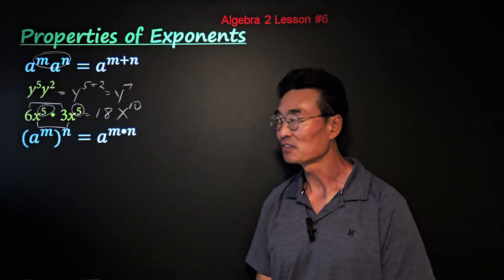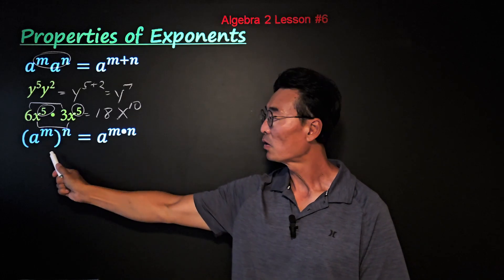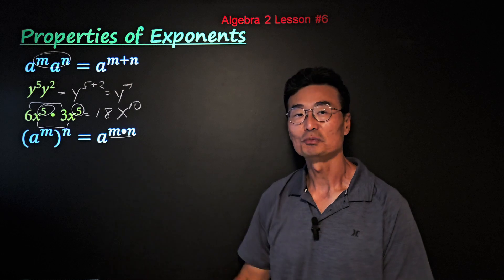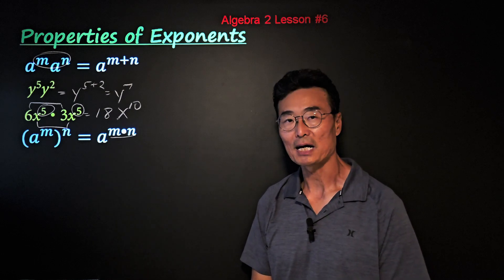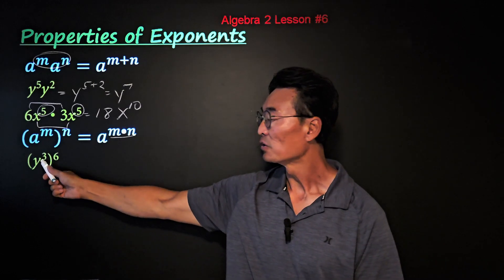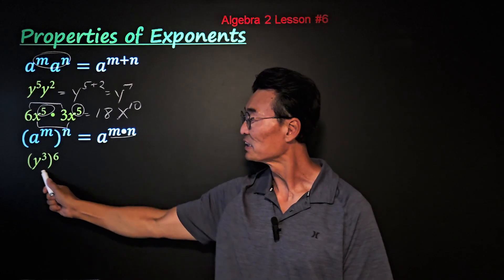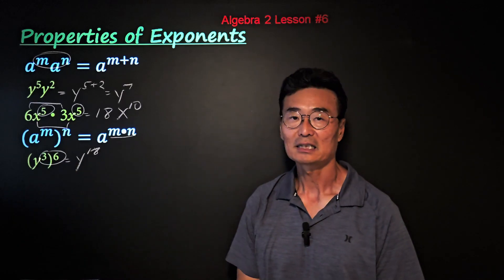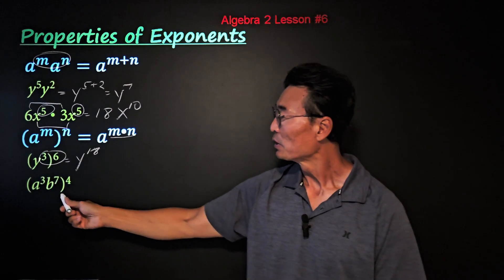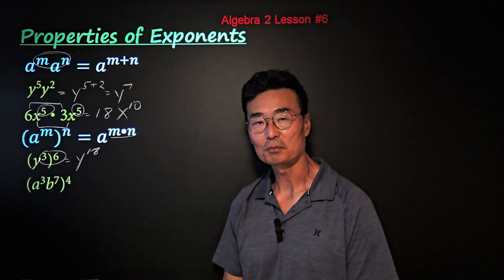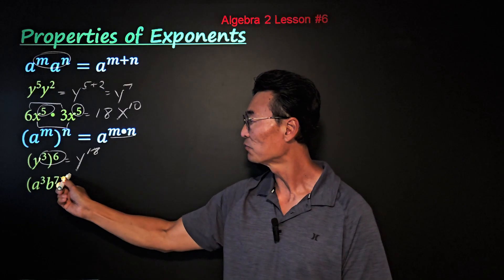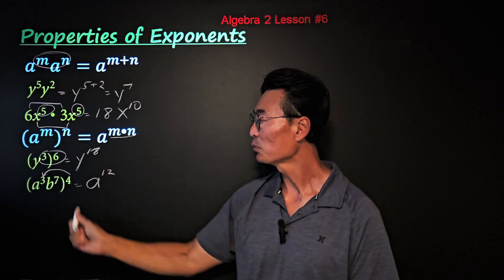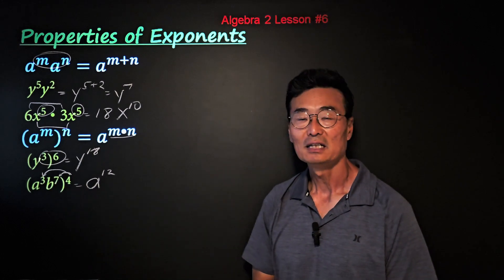The second rule: if you have a to the n, all to the n power — an exponent raised to an exponent — you multiply them. So it becomes a to the n times n. For example, y to the third, all to the sixth, means we multiply 3 times 6. When there's more than one term in the parentheses, such as a cubed and b to the seventh, all to the fourth power, we multiply 4 times 3 to get a to the 12th, and 4 times 7 to get b to the 28th.